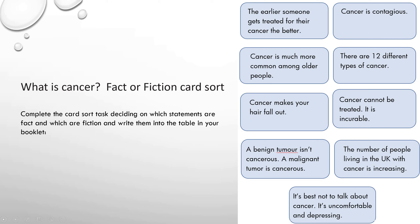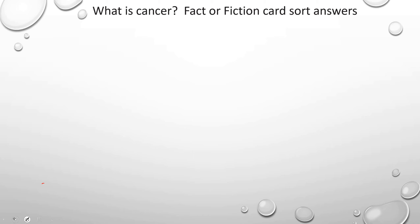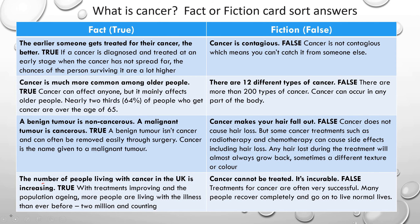These are the fact or fiction card sort statements if you haven't opened up that document. There are nine of them — decide whether they go into the fact or the fiction column. So, the first: fact — true. 'The earlier someone gets treated for their cancer, the better.' This is true. If a cancer is diagnosed and treated at a very early stage, when the cancer hasn't spread that far, the chances of the person surviving are a lot higher. The second is fiction — false. 'Cancer is contagious.' Contagious means you can catch it. You cannot catch cancer from anybody else.